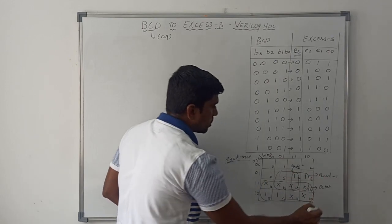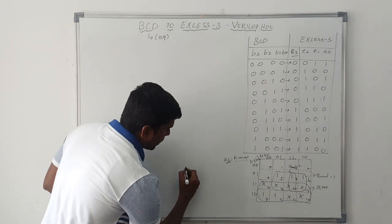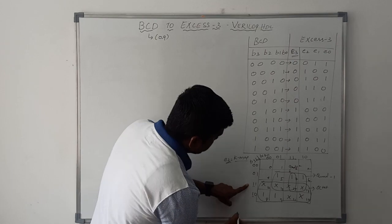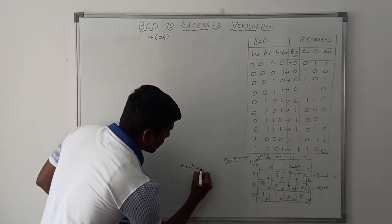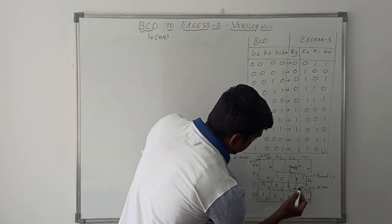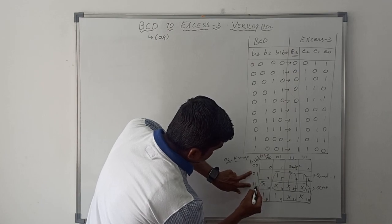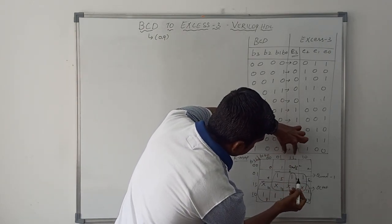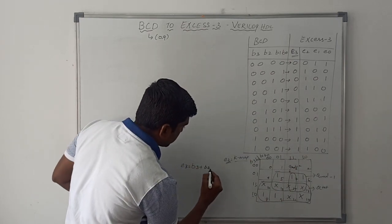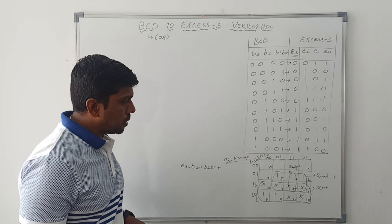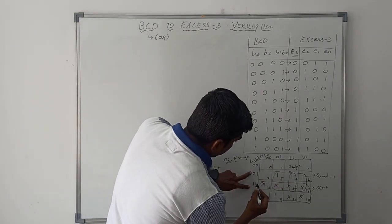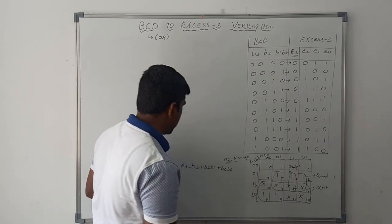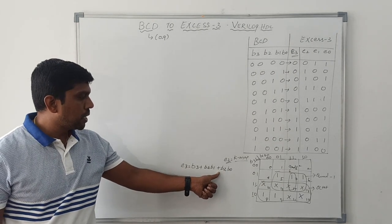After grouping, write the Boolean expression. E3 equals — for the octet, the common term is B3. For quad 2, in the vertical side the common term is B2, and in the horizontal side the common term is B1, giving B2·B1. For quad 3, vertical side is B2 and horizontal side is B0, giving B2·B0. So E3 = B3 + B2·B1 + B2·B0.